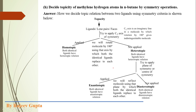The next question is: decide the topicity of methylene hydrogen atoms in n-butane by symmetry operations. Here we have a question of stereochemistry. In normal butane there are 4 methylene hydrogen atoms present. Among those 4 hydrogen atoms we have to find out the topicity relation. Topicity relations are of three types: homotopic, enantiotopic, and diastereotopic. We have to find out which type applies here, using symmetry criteria — by applying symmetry operations.